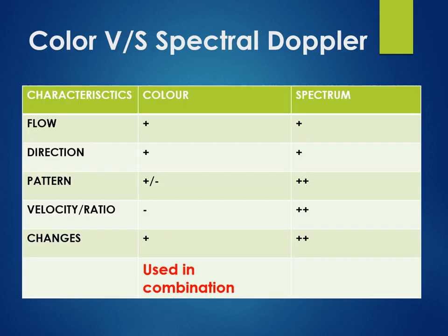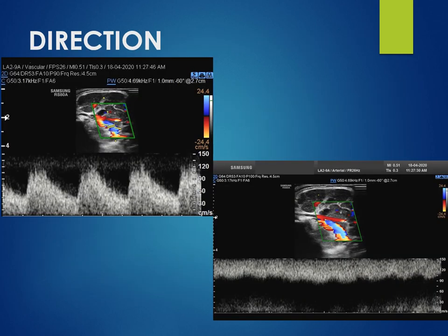Colour and spectral Doppler are generally used in combination. While colour Doppler can pick up flow and direction of flow, the pattern, the velocities, the ratios and changes in them are very well appreciated or judged by spectral Doppler. When we apply spectral Doppler, the flow coming towards the probe is usually seen above the baseline, and flow going away from the probe is seen below the baseline.